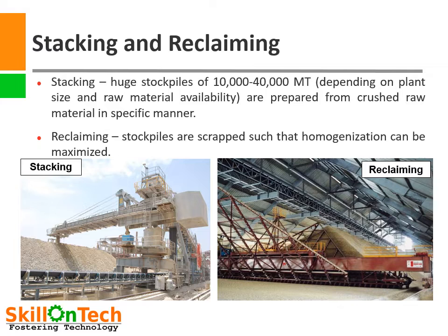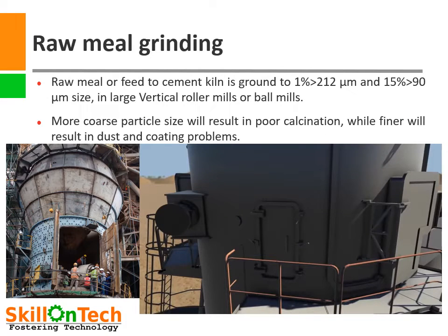These stockpiles are made in a very scientific way such that maximum homogenization can take place. Homogenization is very important for smooth functioning of the kiln and for uniform composition of clinker. Crushed mineral from the mine crusher is stacked using scientific patterns in huge stockpiles — this is called stacking. These stockpiles can be as huge as 40,000 metric tons and are reclaimed using reclaimers in a particular pattern so that maximum homogenization can take place.